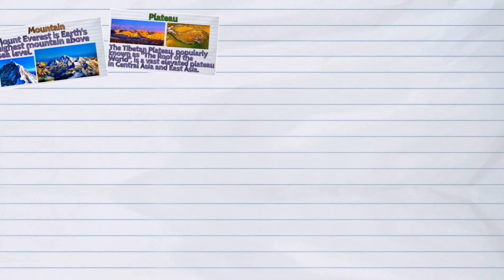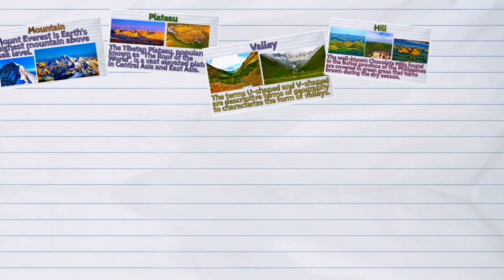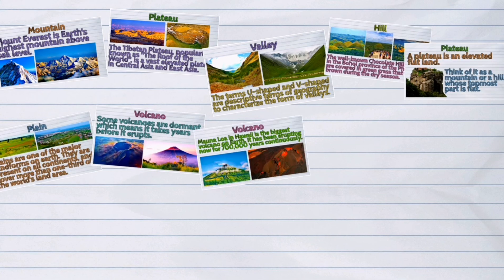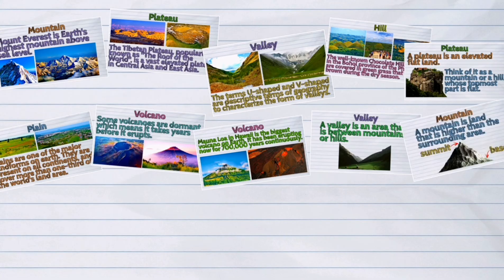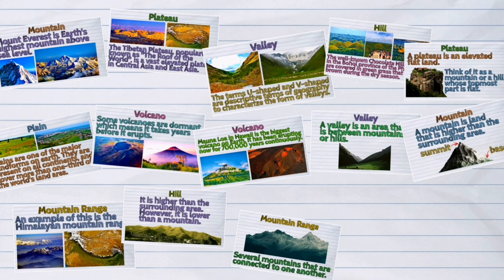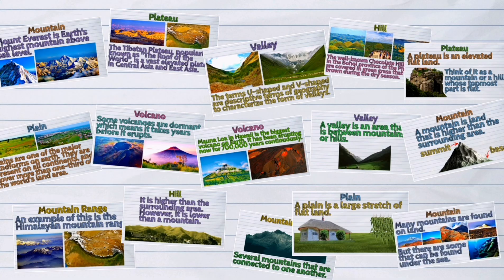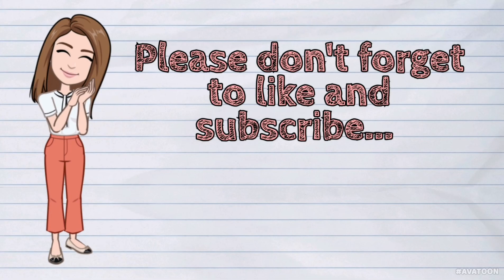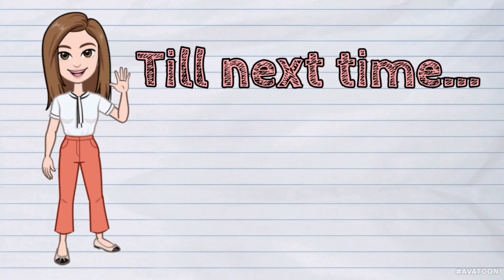And those were the different landforms on Earth: a mountain, mountain ranges, hills, plateau, plain, valley, and volcano. That's all for today. Please don't forget to like and subscribe. Till next time. See ya! Thanks, everyone. Bye!